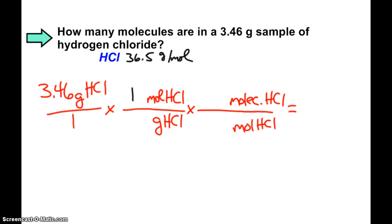So, one mole of HCl, 36.5 grams. And then, of course, one mole of anything is 6.02 times 10 to the 23rd particles. In our case here, molecules.